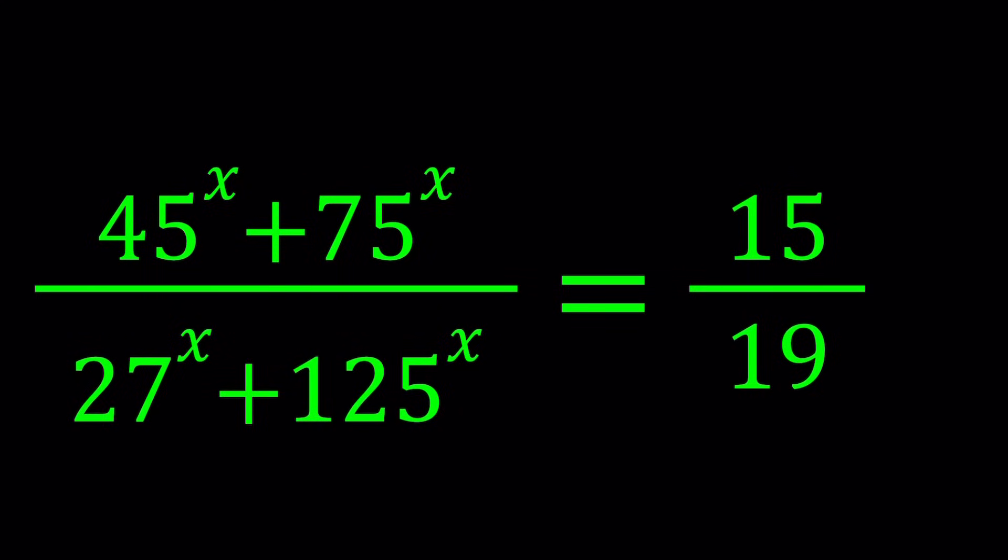Hello everyone. In this video, we're going to be solving a very nice exponential equation. We have 45 to the power x plus 75 to the power x, all divided by 27 to the power x plus 125 to the power x, and the answer is 15 over 19. We're going to be solving for x values, real x values, and we can also briefly talk about complex values.